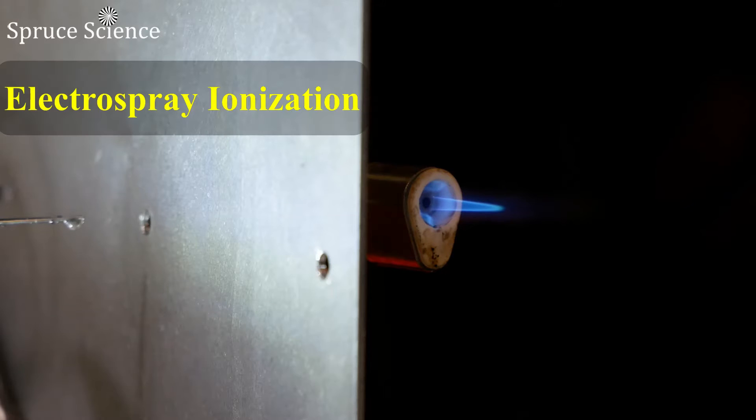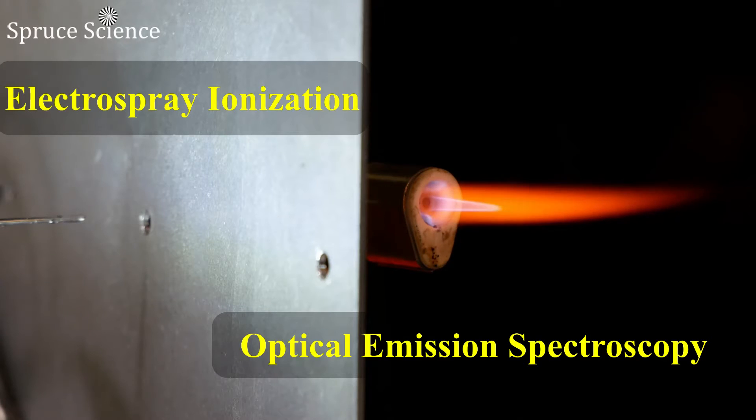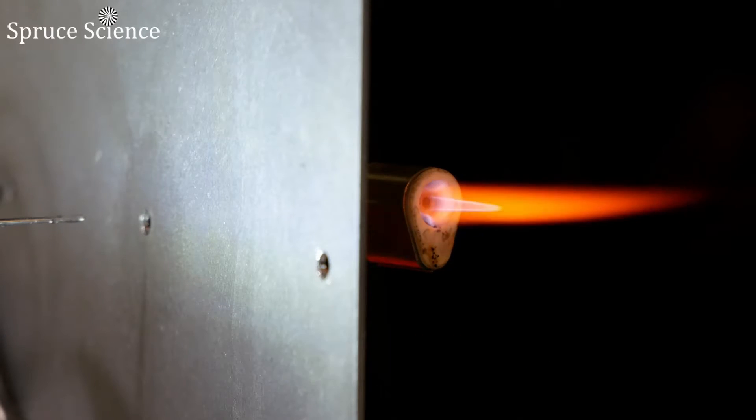The electrospray ionization coupled with optical emission spectroscopy is an analysis method that can be used to detect alkaline metals, for example.